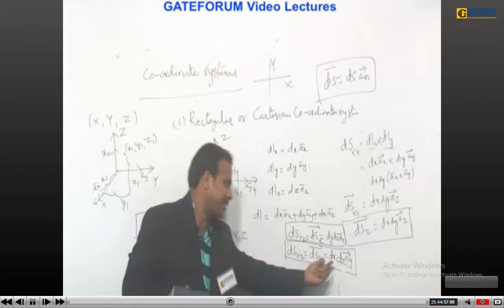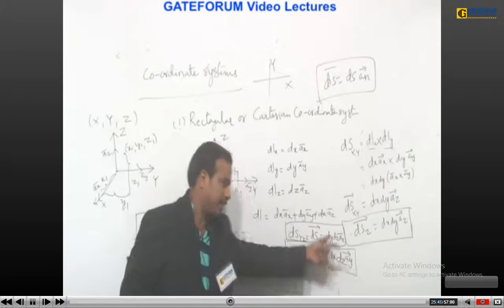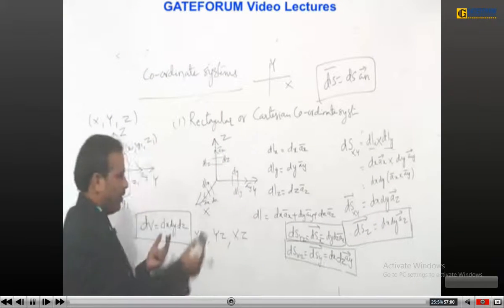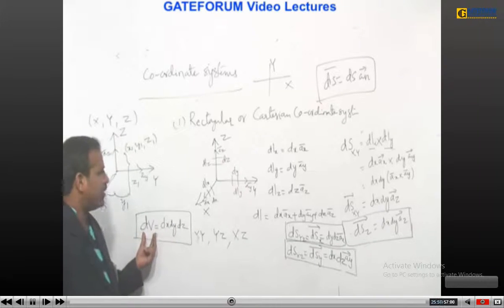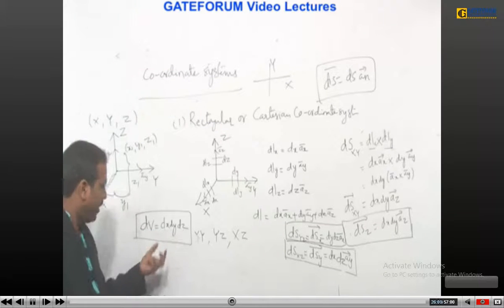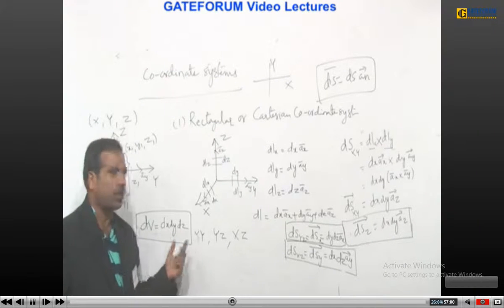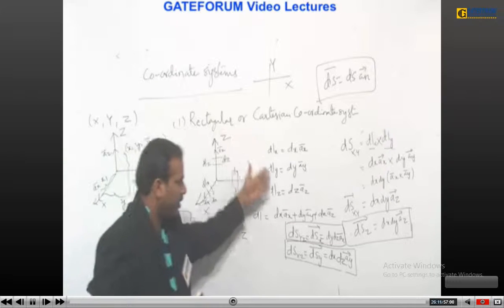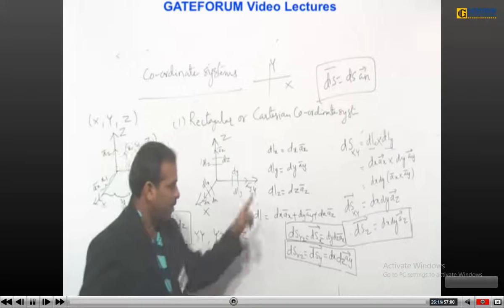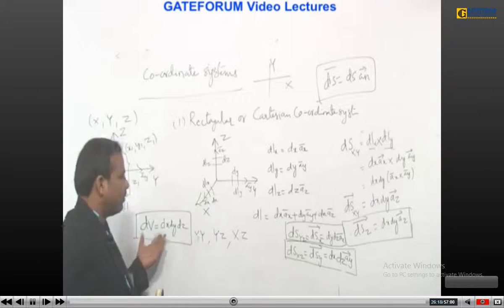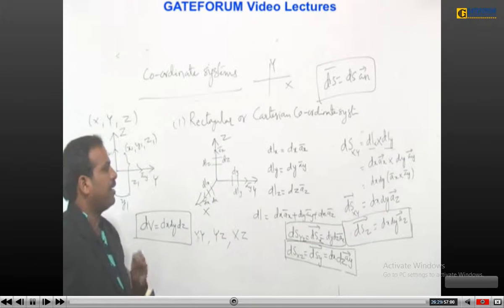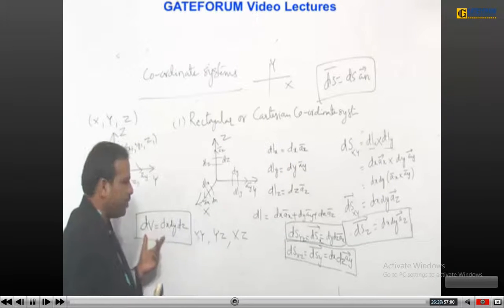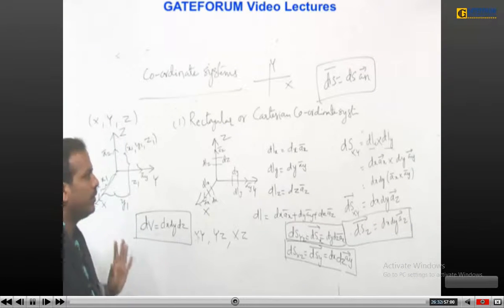A small word correction: the surface made up of x and z is dx·dz·āy — that's correct. So the differential volume is always a scalar quantity. From this we understand: the differential length element is a vector term, the differential surface is also a vector term, but the differential volume is a scalar term.